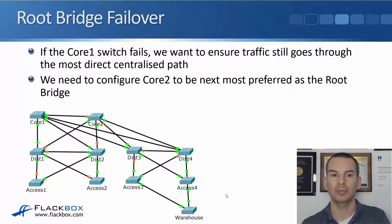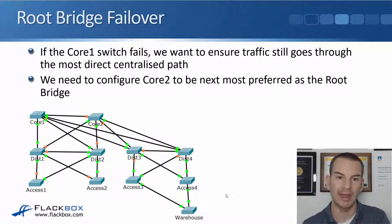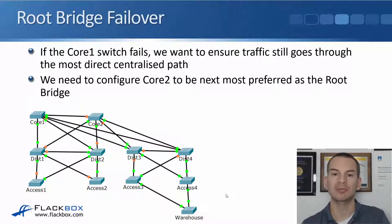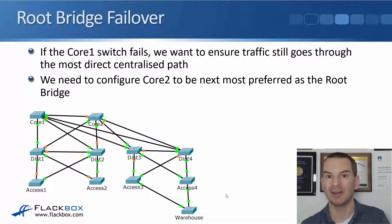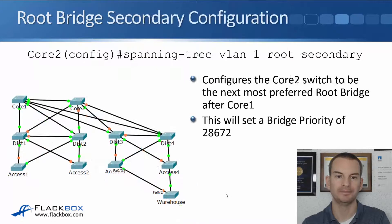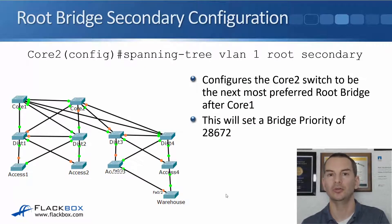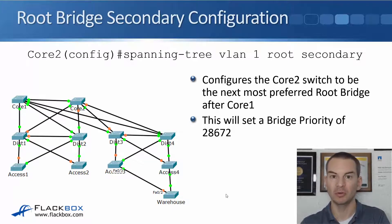For this same example, if the Core 1 switch fails, we want to ensure that traffic still goes through the most direct, centralized path. So to do that, we need to configure Core 2 to be the next most preferred root bridge. If we didn't do that and Core 1 went down, we would be back to the warehouse being the root bridge again — so we want to avoid that. We always want traffic to be going through the core. So we go on to the command line on Core 2 and say: spanning tree VLAN 1 root secondary. It's root primary on the switch you want to be the root bridge, and root secondary on the switch that you want to be the backup.